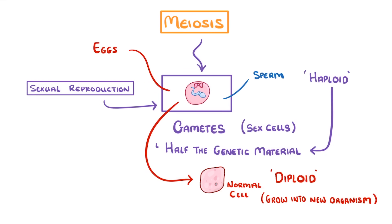In order to make these gametes, a cell needs to undergo meiosis, which is a few different steps we need to know about.